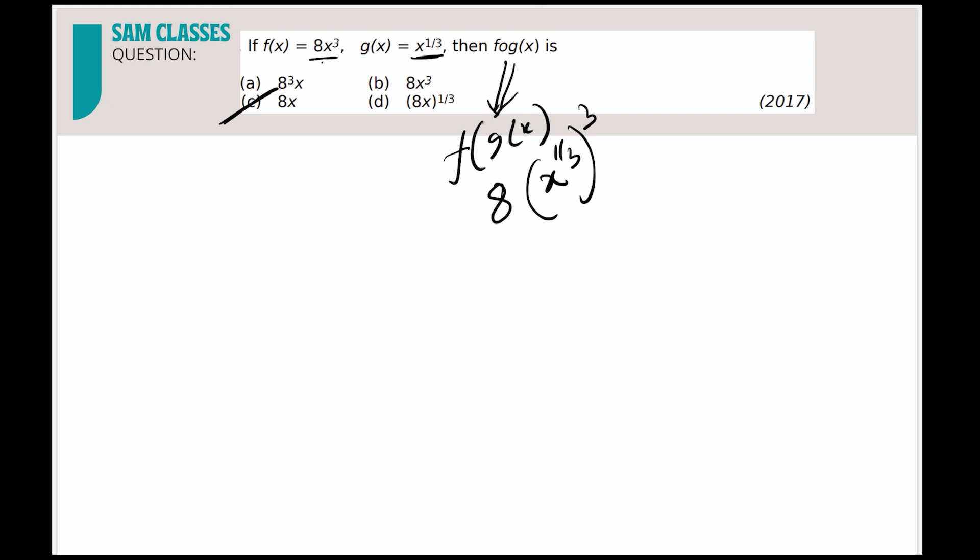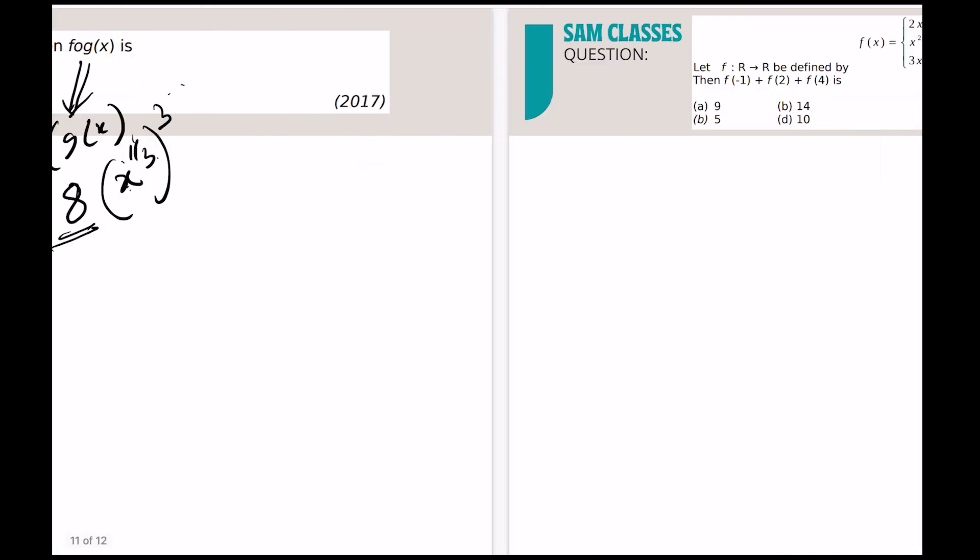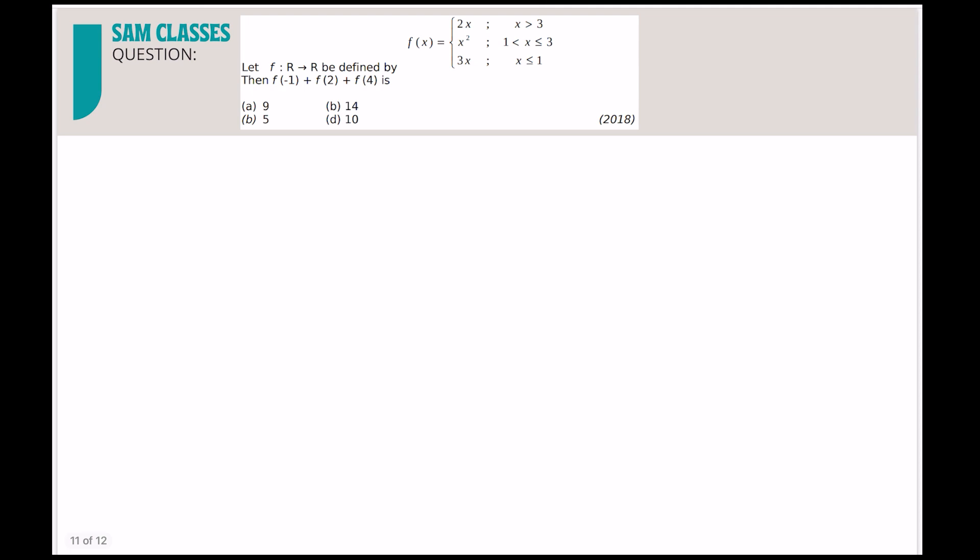So in function f, f means where I put in place of x only - because if I put f(x), I get 8x³. If I put f(y), I'll get 8y³. So change is only happening in this part. So it will be 8 only, that's it. And (x^(1/3))³ is x only. That's it.